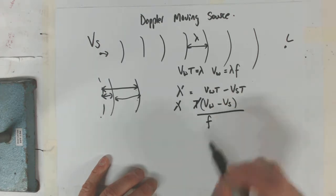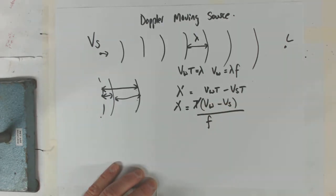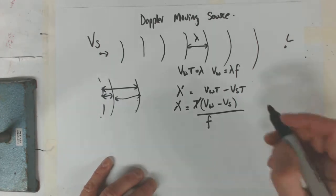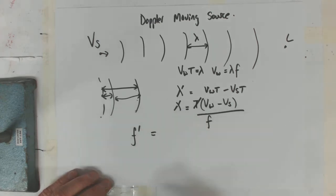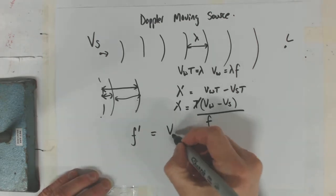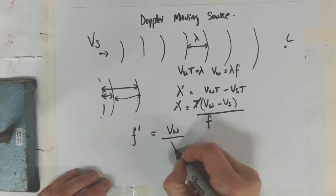Now that's the new wavelength. If we've got the new wavelength and we want the new frequency, we'll call that F dash. Then the new frequency is going to be the velocity of the wave divided by the new wavelength.